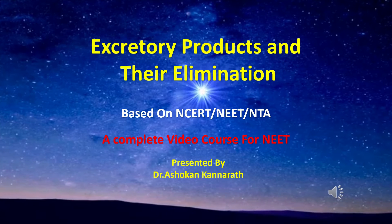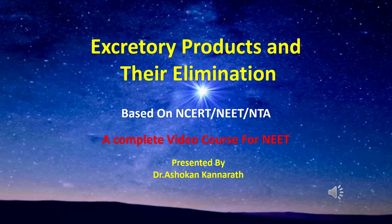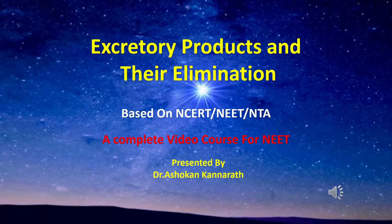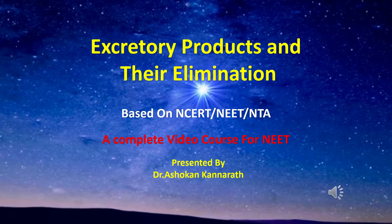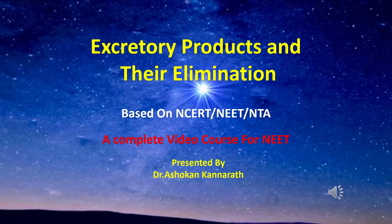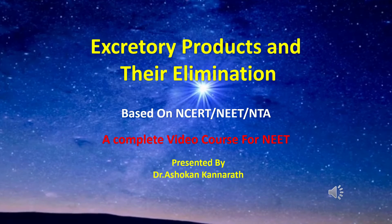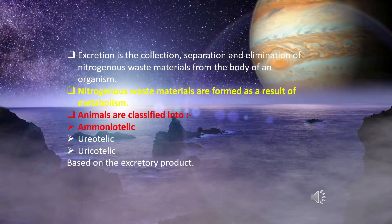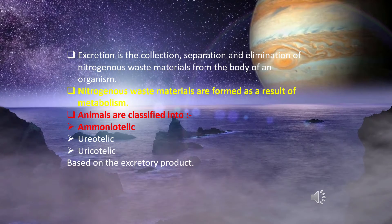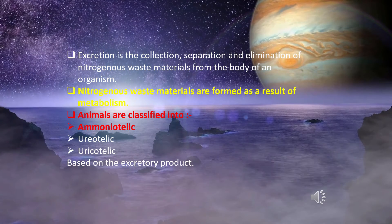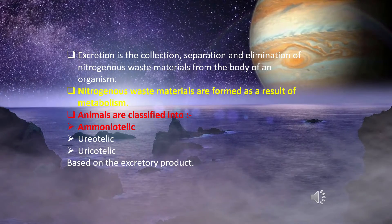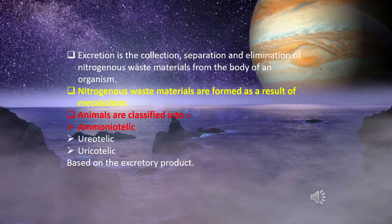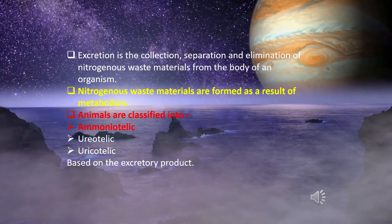This video is based on the NCERT and NEET syllabus and covers the complete chapter on excretory products and their elimination. Students are requested to follow the video carefully and solve as many questions as possible. Excretion is the collection, separation, and elimination of nitrogenous waste materials from the body of an organism. Nitrogenous waste materials are formed as a result of metabolism. Animals are classified into ammonotelic, ureotelic, and uricotelic based on their excretory product.